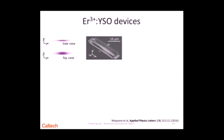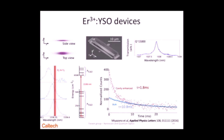That type of device was for erbium in yttrium orthosilicate. First, we also experimented with devices made with focused ion beam milling. Again, we can make resonators, and we observe coupling of the erbium transition to the cavity. We also measured that the lifetime of the erbium atoms gets shortened inside the cavity, which is a sign of coupling.